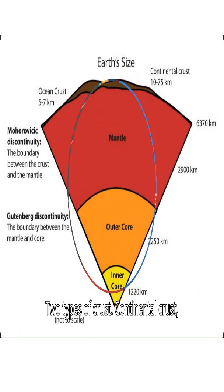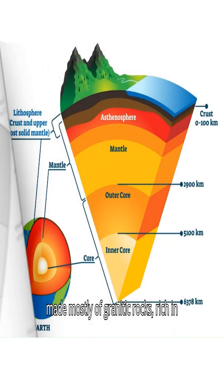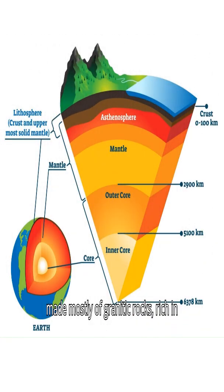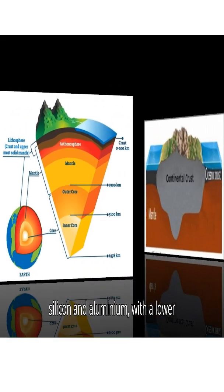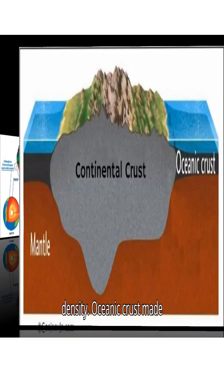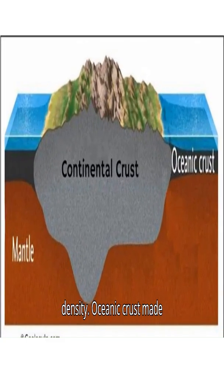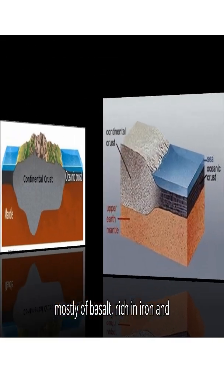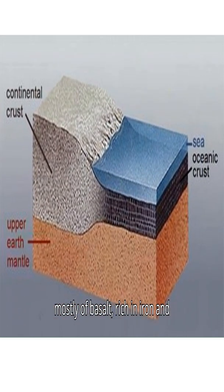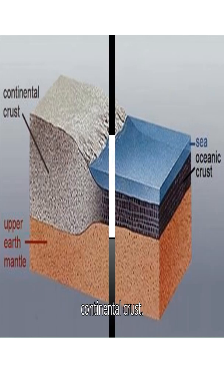There are two types of crust. Continental crust is made mostly of granitic rocks, rich in silicon and aluminum, with a lower density. Oceanic crust is made mostly of basalt, rich in iron and magnesium, and is denser than the continental crust.